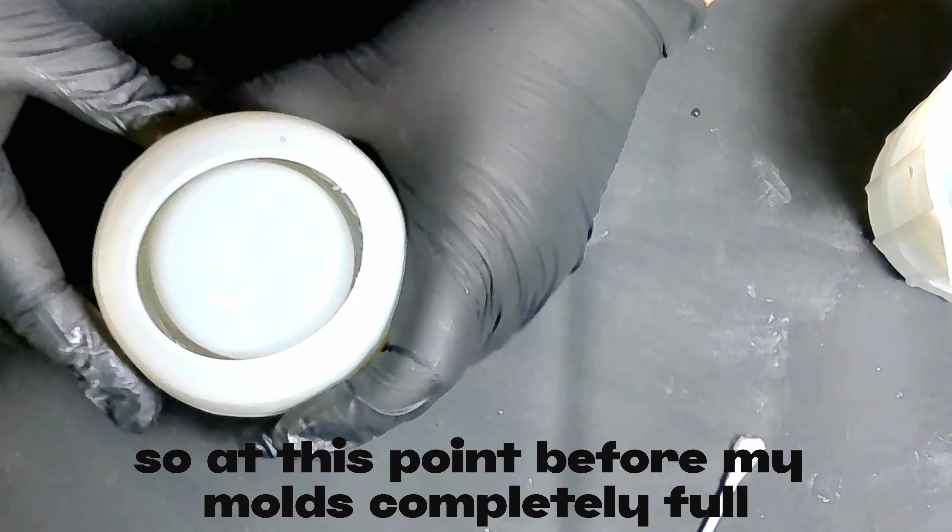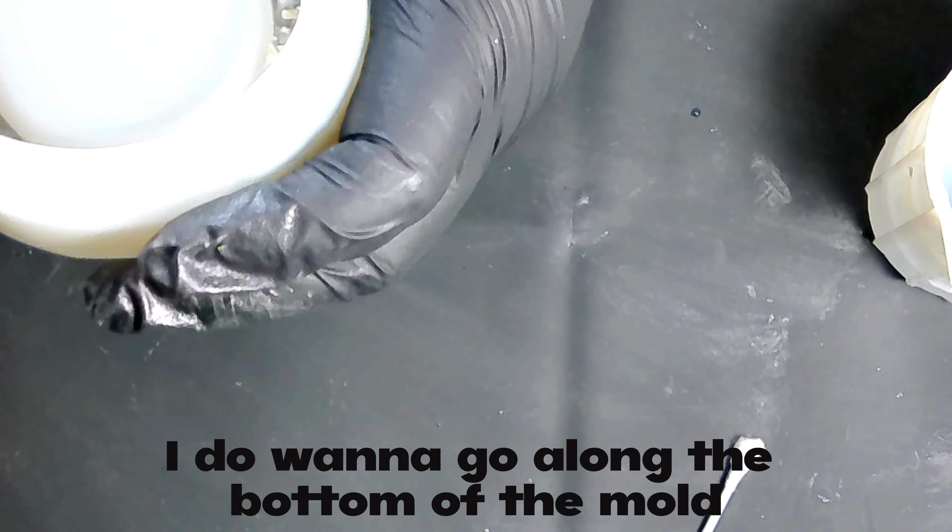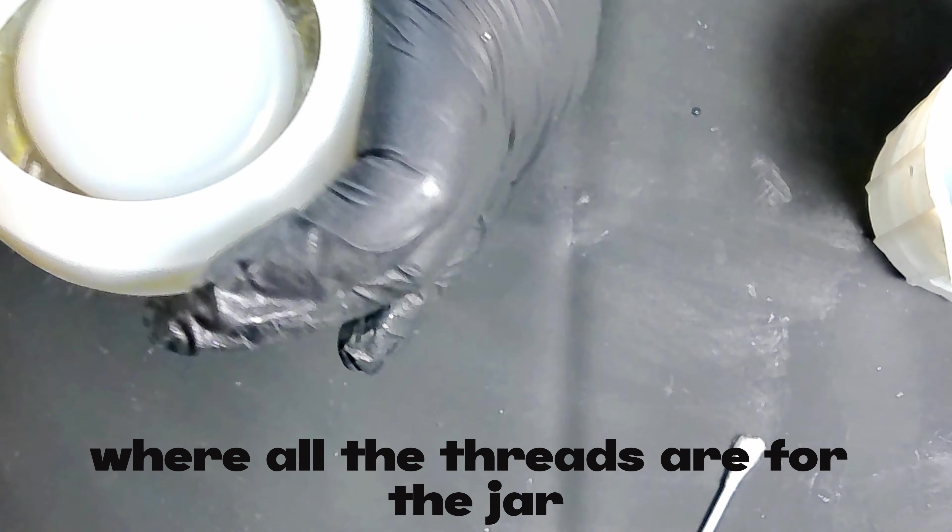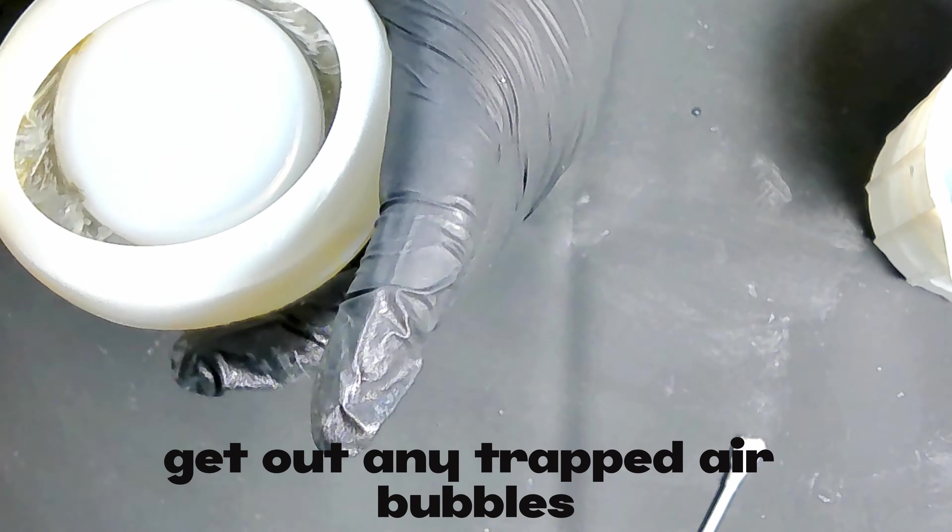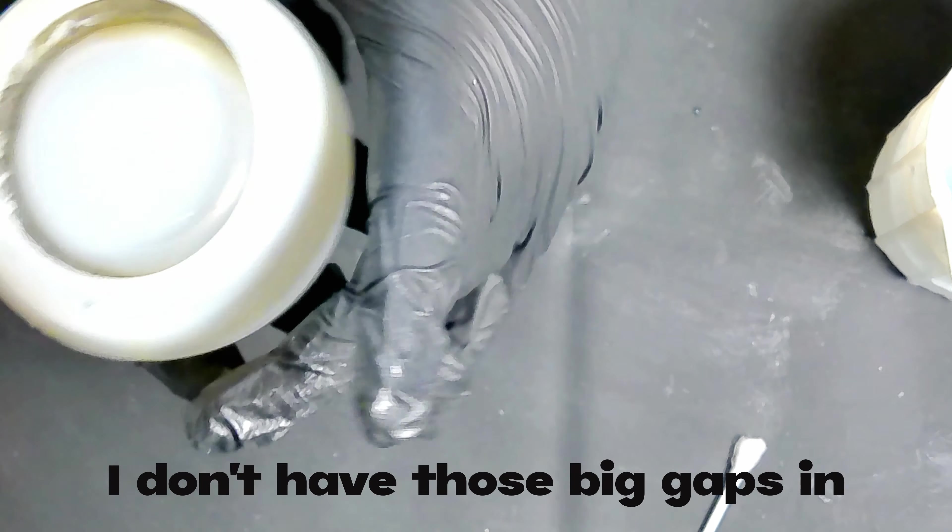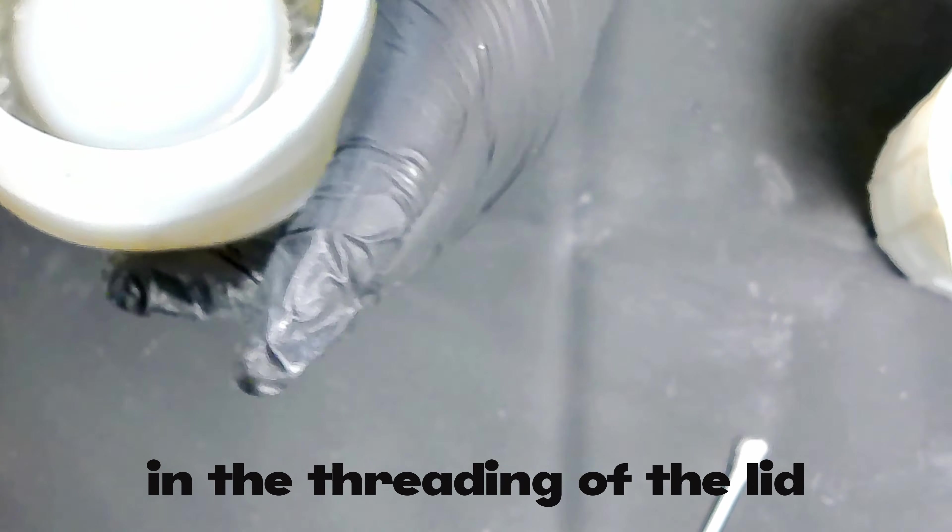So at this point, before my mold's completely full, I do want to go along the bottom of the mold where all the threads are for the jar, and I want to give it a really good squeeze, get out any trapped air bubbles so that when we demold it later on, I don't have those big gaps in the threading of the lid.